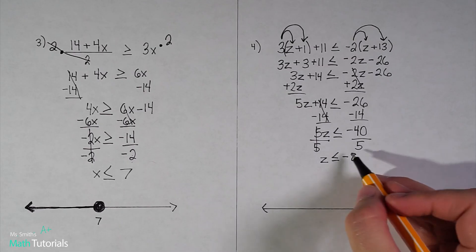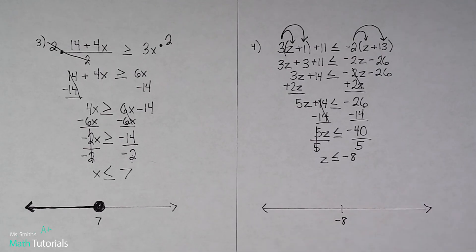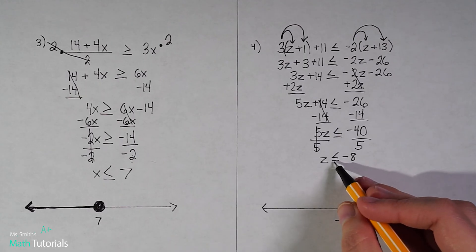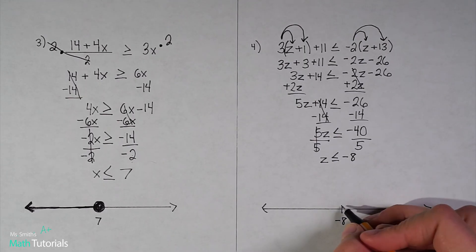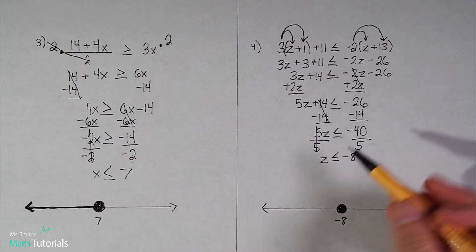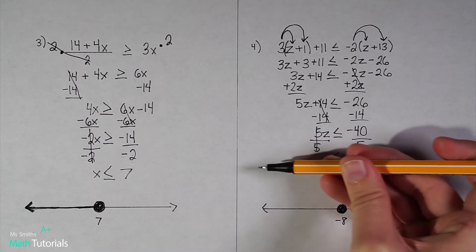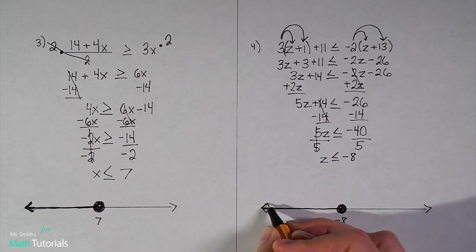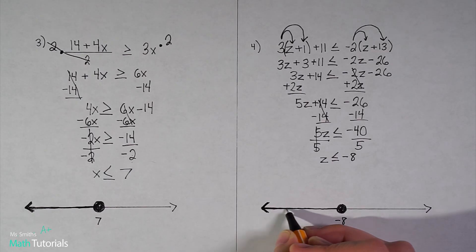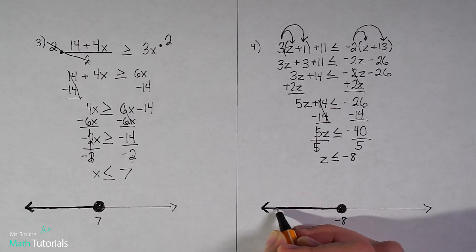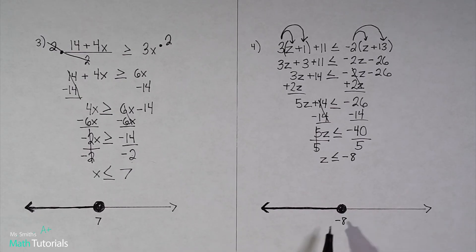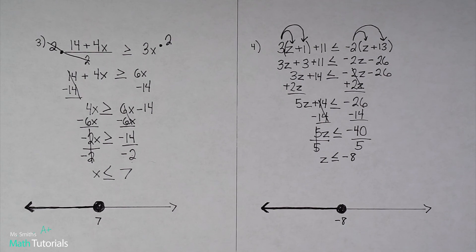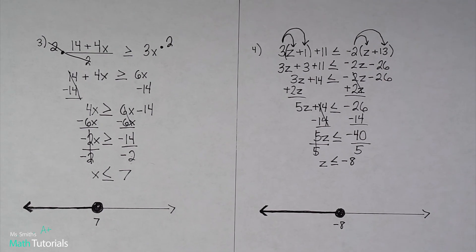Now I'm ready to graph. Negative 8 is going to be my center number. I'll draw a closed circle because it does have the or-equal-to line, then fill it in. As long as your variable is on the left, you go with whichever way it's pointing — it's pointing this way, so I shade everything to the left. Looking at this graph, the unknown variable could be negative 8 or anything less than negative 8. This has been MsSmith's Math Tutorials.